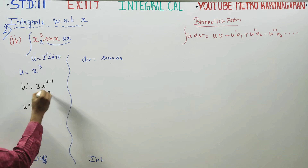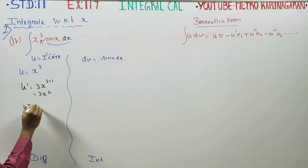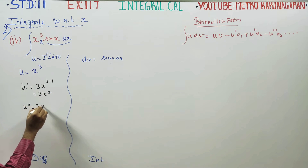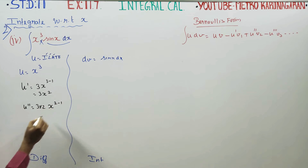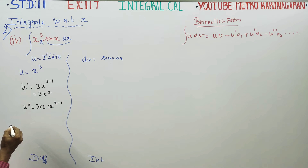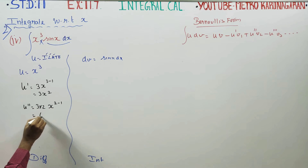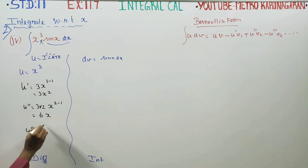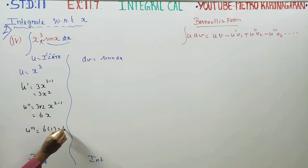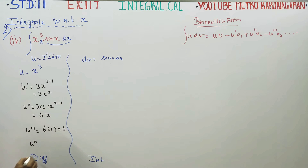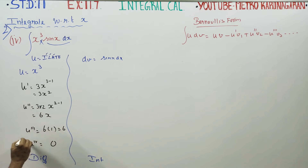u double dash: differentiate 3x squared. 3 into 2 is 6, x to the power 2 minus 1. So 2 threes are 6x. u triple dash: x to the power 1 differentiates to 6. u 4th differentiation — the answer is 0. The sum is closed.